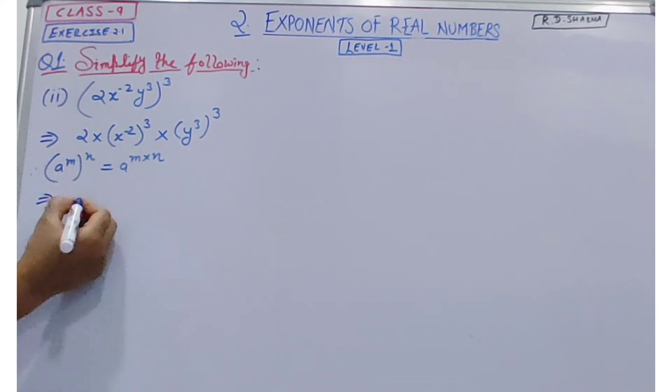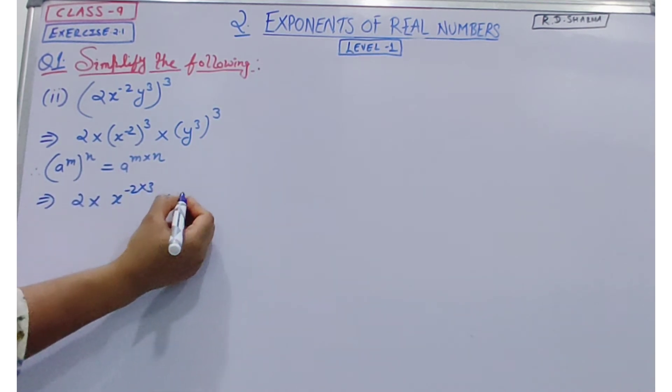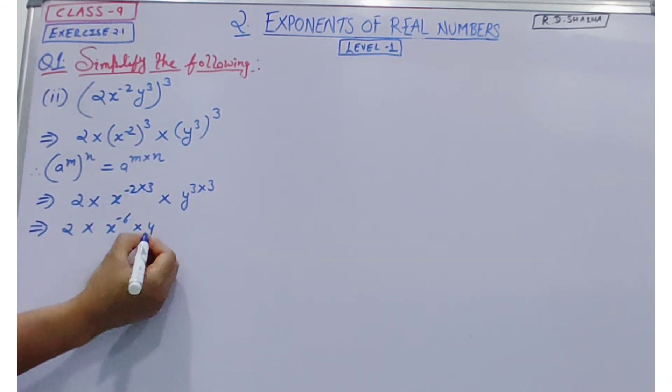So 2 into x to the power minus 2 into 3 multiply y to the power 3 into 3. So 2 into x to the power minus 2 into 3 minus 6 into y to the power 3 into 3, 9.